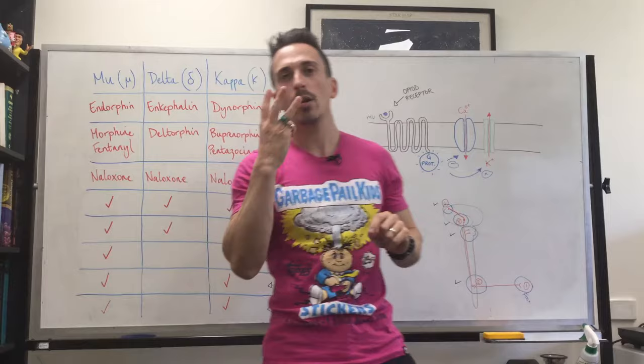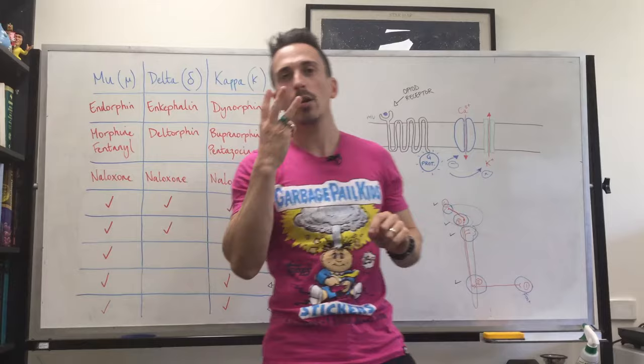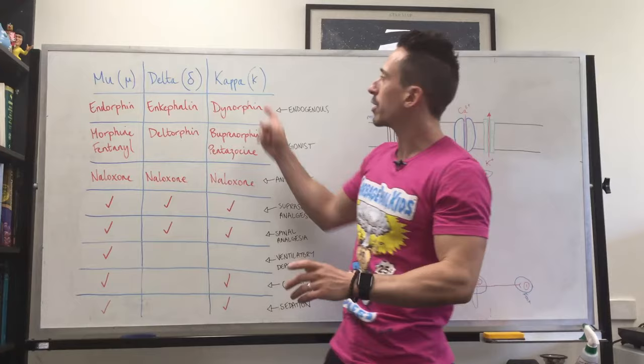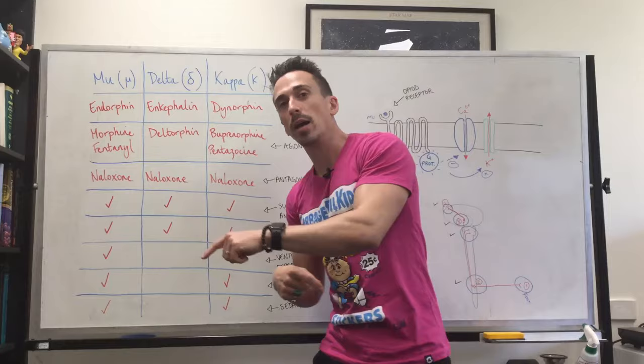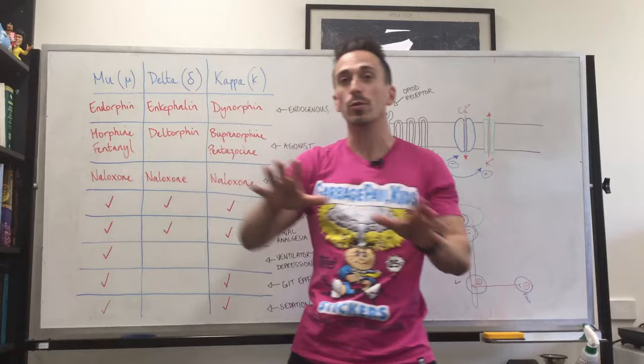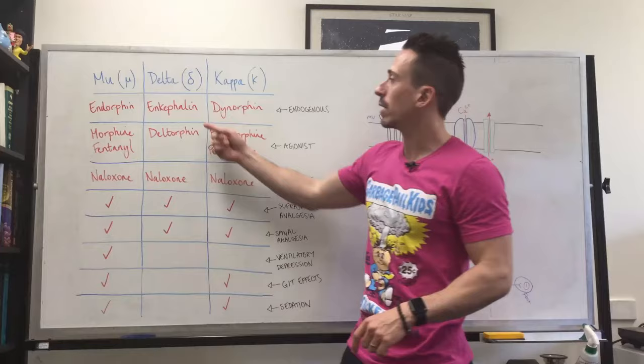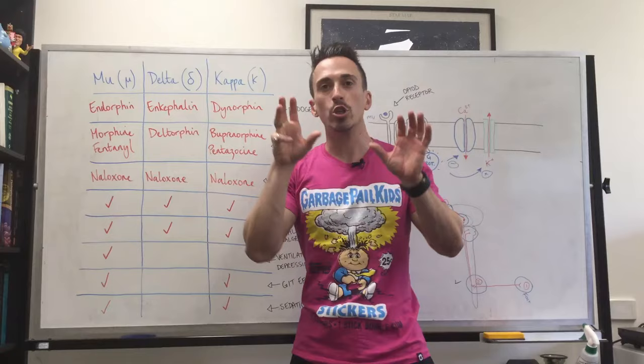When we look at these three receptors that opioids bind to—mu, delta, and kappa—you can see the various symbols that denote each receptor. There are specific endogenous chemicals that we release that bind to these receptors. For example, if we want to bind to and activate mu receptors, we release endorphins. For delta receptors, we release enkephalins. And for kappa, we release dynorphins. These are the endogenous chemicals that we make inside our body for endogenous pain relief.